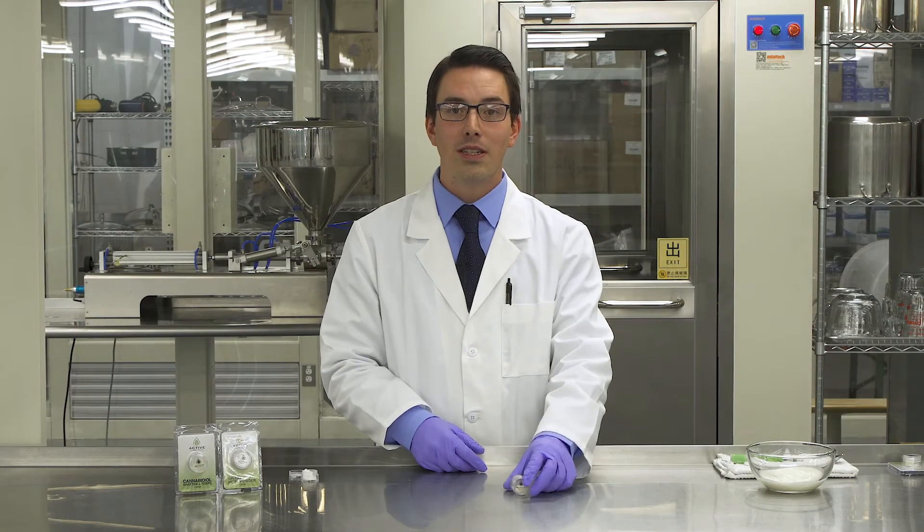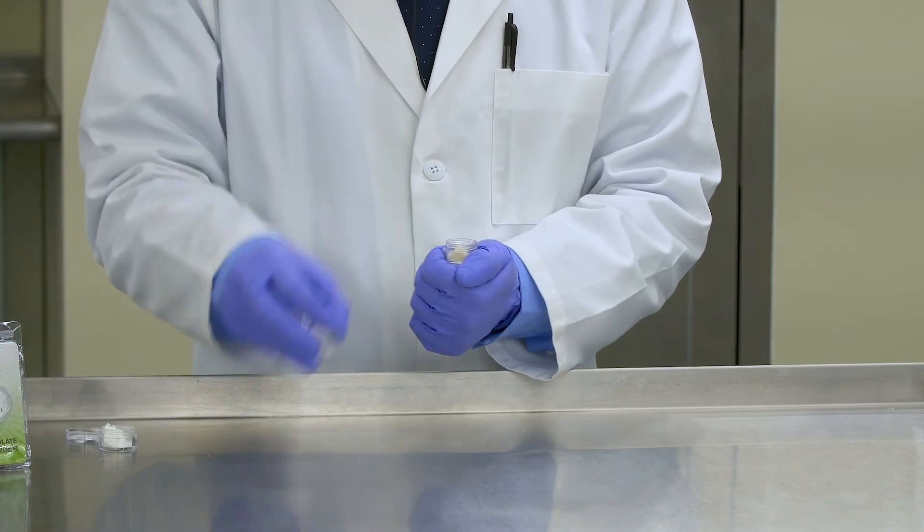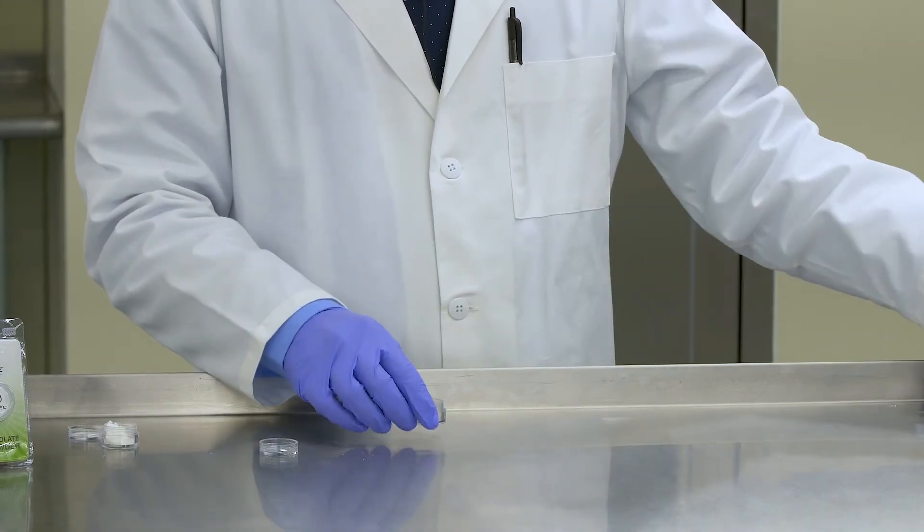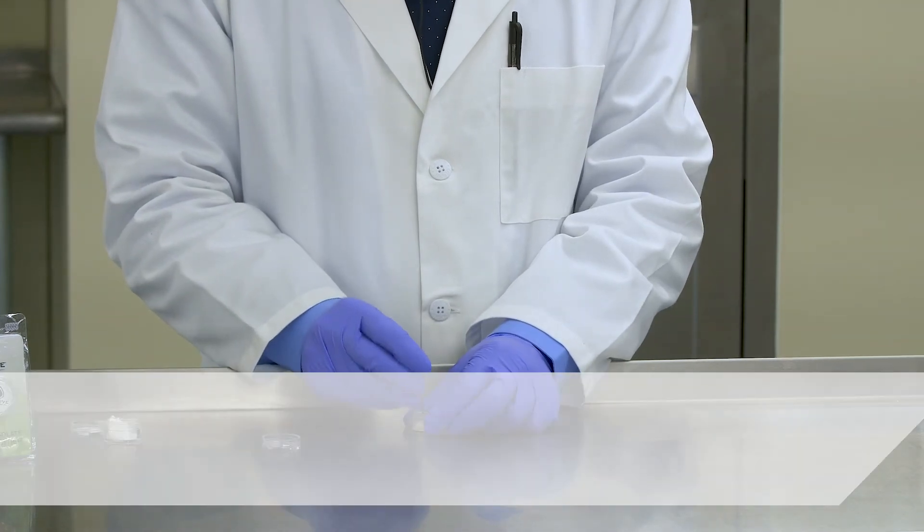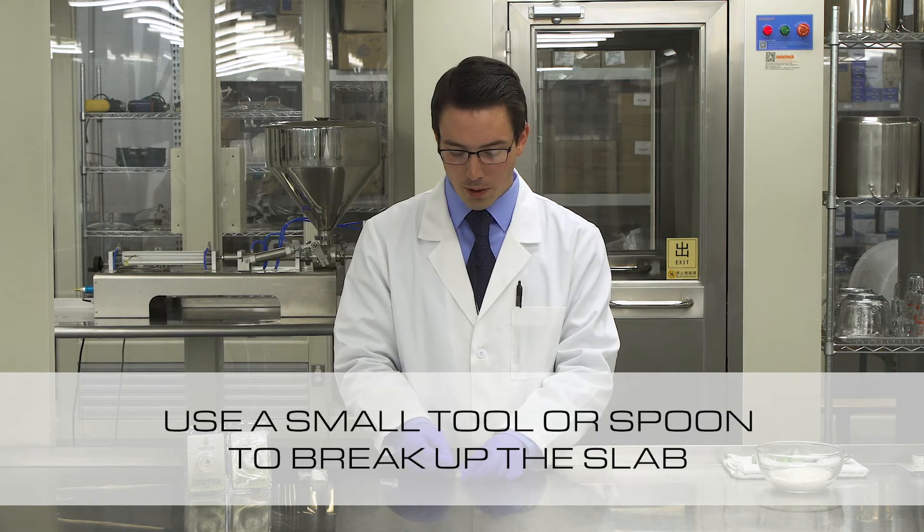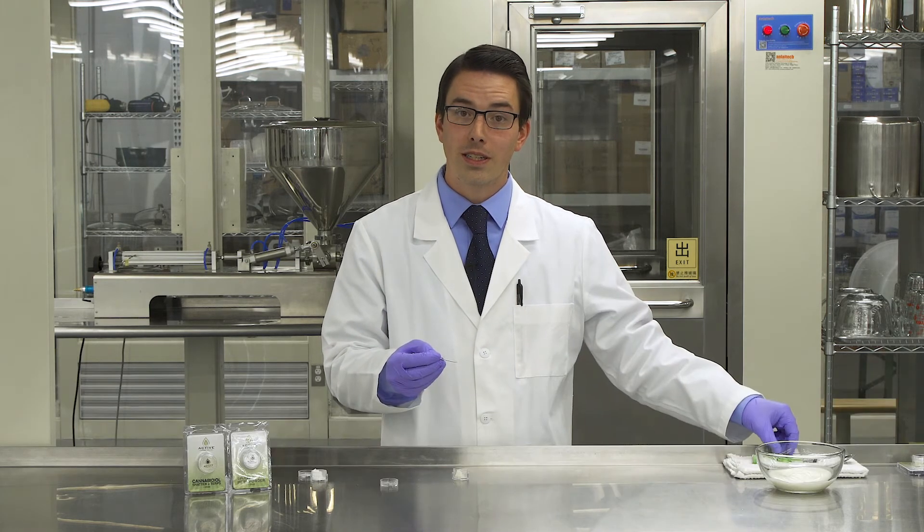To use the CBD isolate slab, remove it from its plastic clamshell packaging and unscrew the lid. Find yourself a small tool or spoon and break up the slab. Using the spoon, remove the perfect dose of CBD isolate slab.